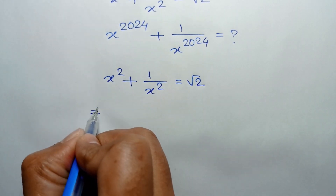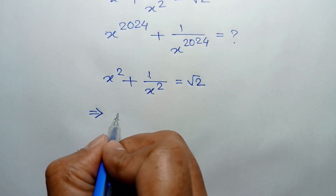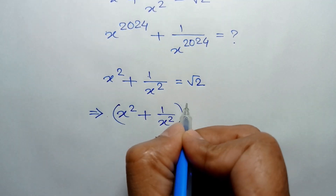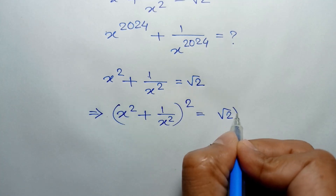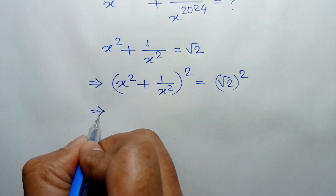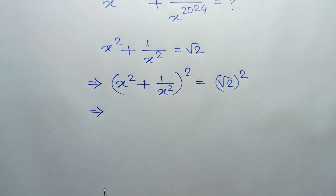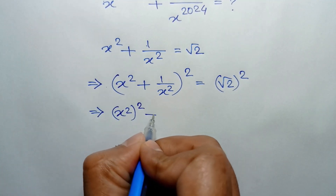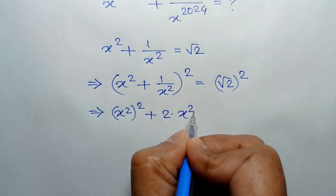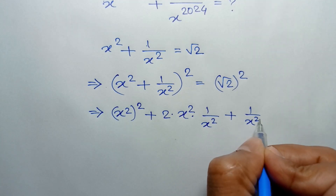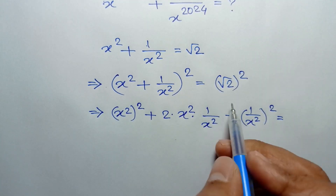Now, taking a square to both sides, we will have x squared plus 1 over x squared, whole square, is equal to square root of 2, whole square. Applying the formula (a + b)² = a² + 2ab + b², we can write it as x squared whole square plus 2 times x squared times 1 over x squared plus 1 over x squared whole square.